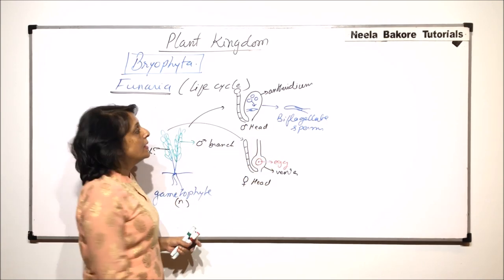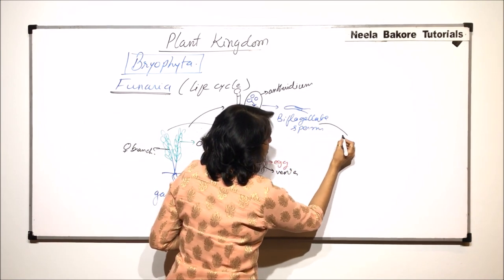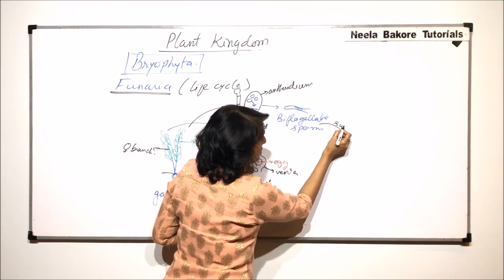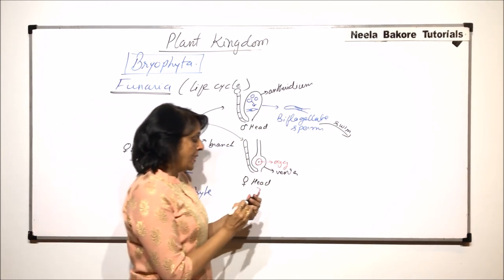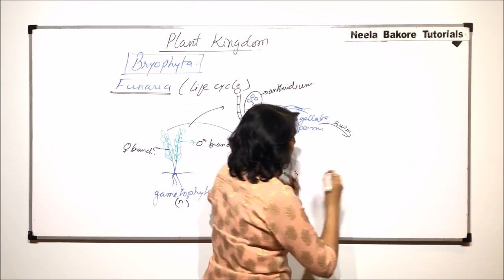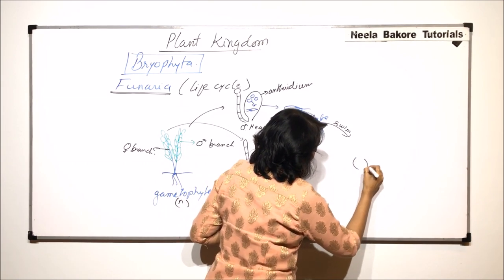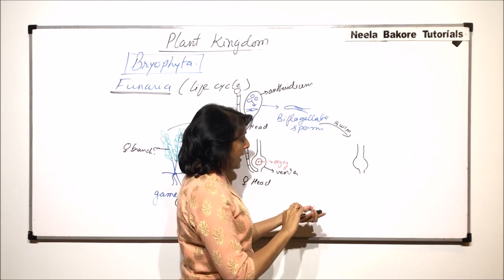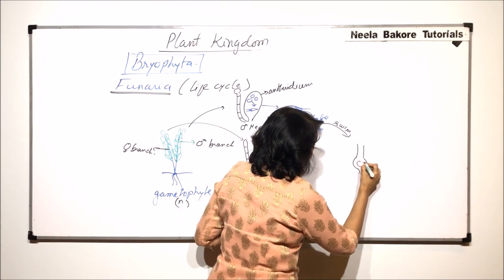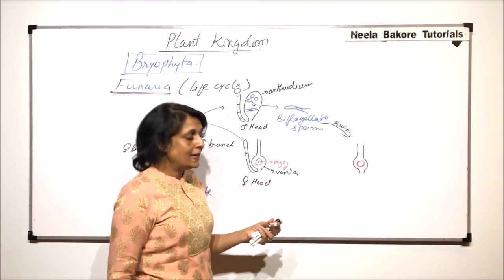Now the sperm is going to swim, and for which it requires that thin layer of water. And it swims and reaches up to the egg. So here is this egg. And up till this egg the male gamete has reached.